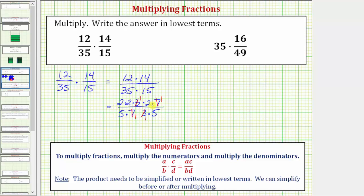So now we can find these products knowing our answer will be in lowest terms, or completely simplified. The numerator is two times two times two, which is eight, and the denominator is five times five, which equals twenty-five. So the product in lowest terms is eight twenty-fifths.